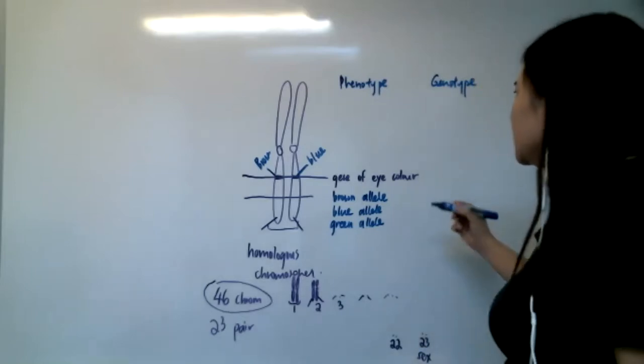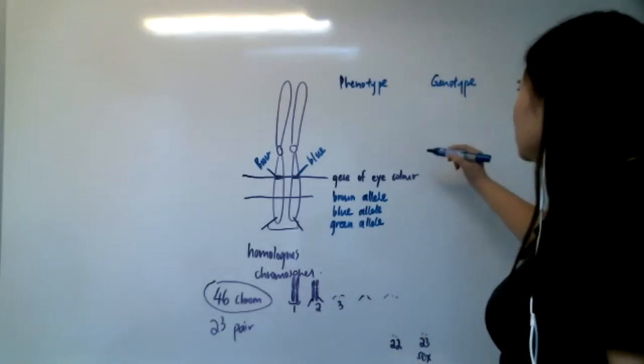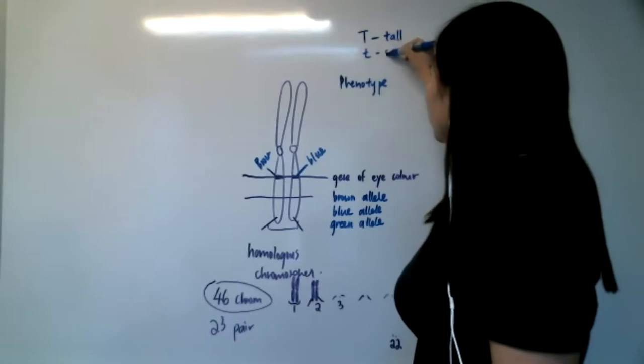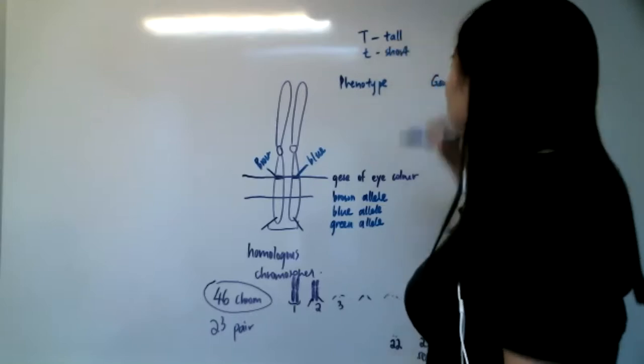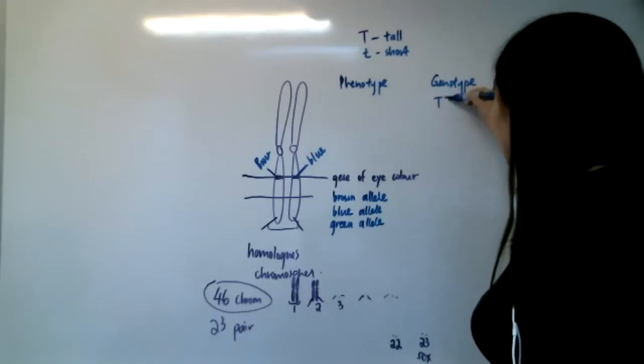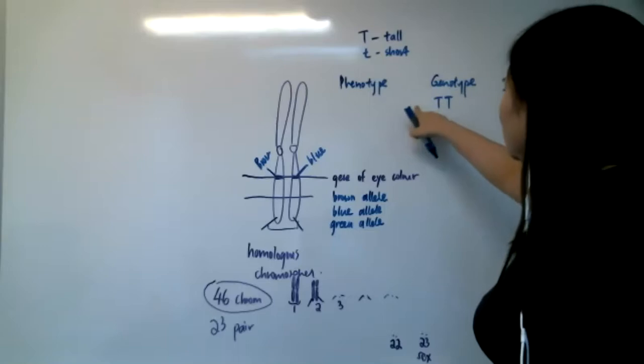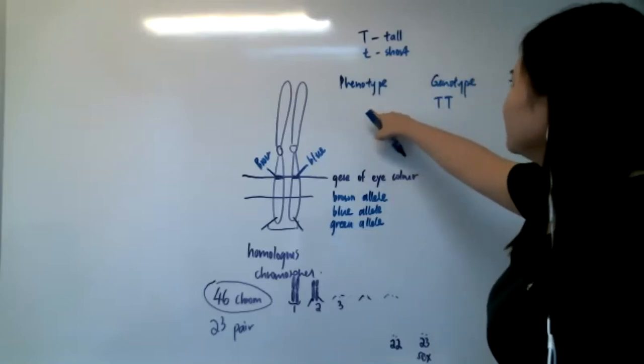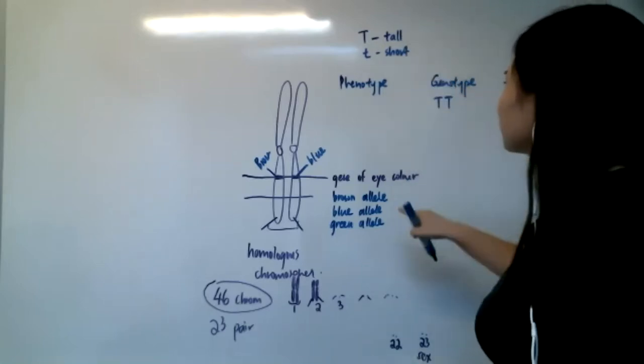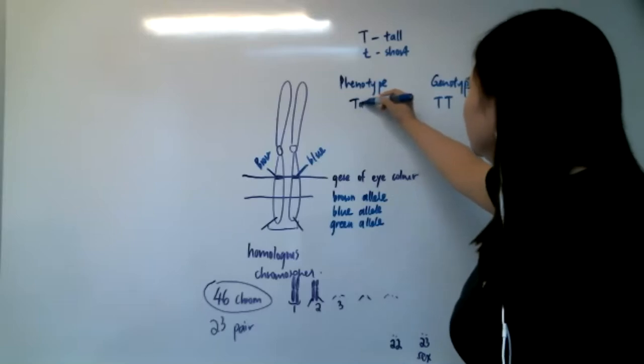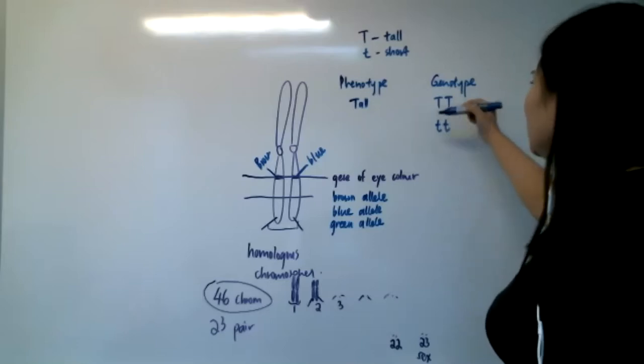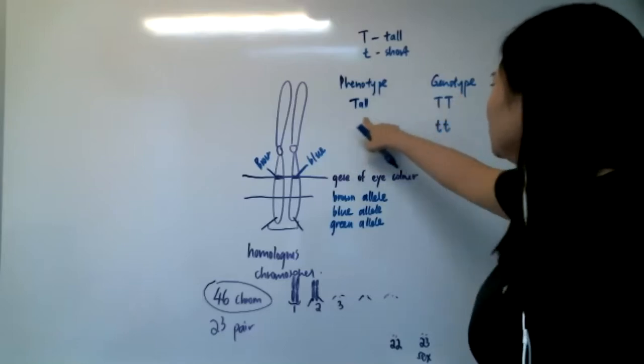Say we are looking at allele T - capital T for tall, small t for short. If your dad gives you a capital T allele and your mom gives you a capital T allele, what is your observable trait? Tall or short? Tall. Tall, yes. If your dad gives you a small t and your mom gives you a small t, you will end up with what type of observable trait? Short. Yes, short.